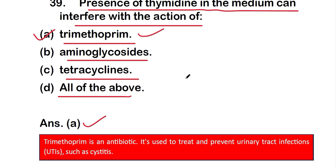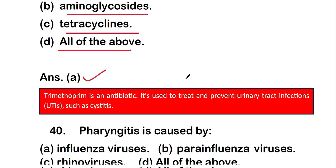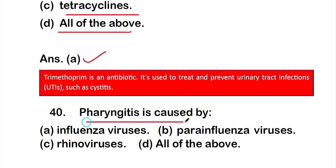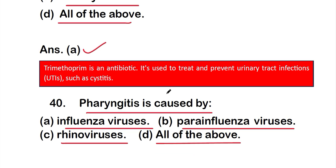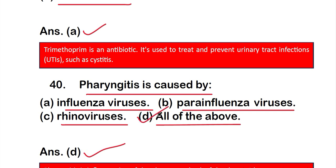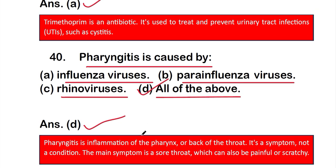Question 40: Pharyngitis is caused by — option A: influenza viruses, option B: parainfluenza viruses, option C: rhinoviruses, or option D: all of them. The right answer is option D — all of these viruses are responsible for pharyngitis. Pharyngitis is inflammation of the pharynx or back of the throat; the main symptom is a sore throat. These are all 20 questions of this part 2 video on medical microbiology. Thank you for watching.